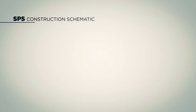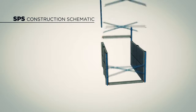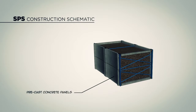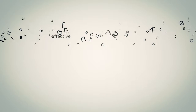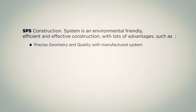The SPS construction system is an elongated container construction system that consists of three elements: precast concrete panels, fastener rods, and filler media. The SPS construction system is an environmentally friendly, efficient, and effective construction system with lots of advantages.